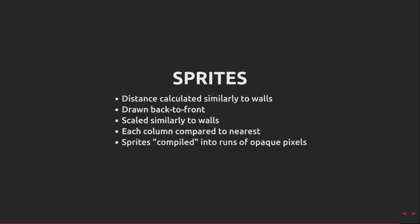This video has mostly been about the map render in Wolfenstein. The sprites, the movable characters and so on, are drawn in a similar manner. The sprites are sorted by distance from the player, drawn furthest and nearest and are scaled similarly to the walls.